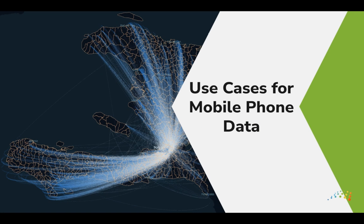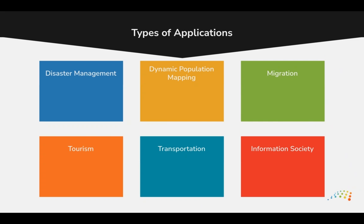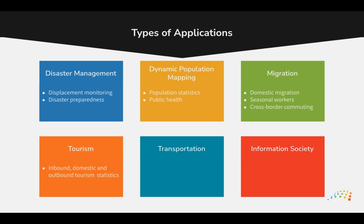With these strengths and limitations in mind, we can look at some of the applications of CDR data. CDR data has a broad range of applications, such as disaster management — including informing disaster preparedness and monitoring the displacement of people — dynamic population mapping for official statistics and public health, migration including seasonal workers and cross-border commuting, tourism statistics, transportation including commuting statistics and traffic demand modelling, and insights into information societies through ICT statistics.